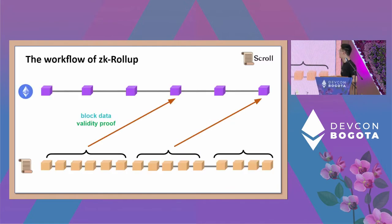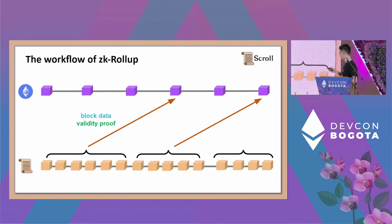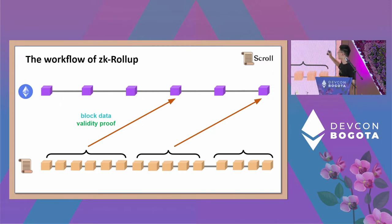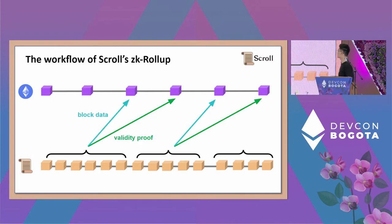On Ethereum layer one, because you need consensus, blocks are generated slowly. On layer two, you can generate blocks much faster and with higher throughput. You generate multiple blocks, and then after a period of time, you roll up your transaction data and generate a validity proof to prove all transactions are correct, then send that to Ethereum layer one. Importantly, the block data doesn't rely on the validity proof — it's used for data availability. We separate the block data from the validity proof.